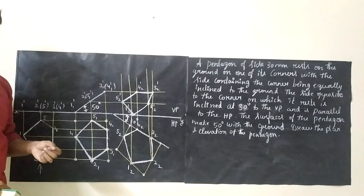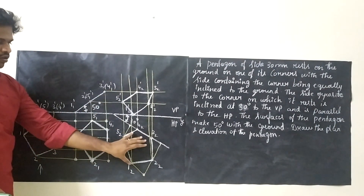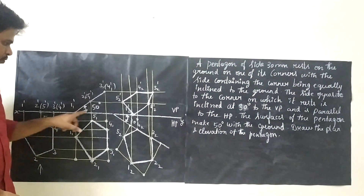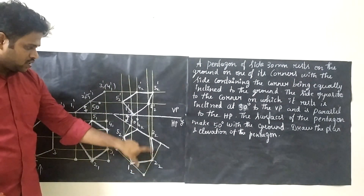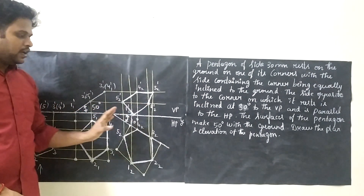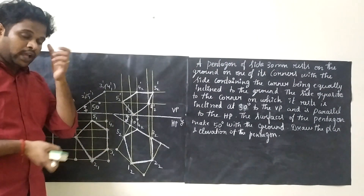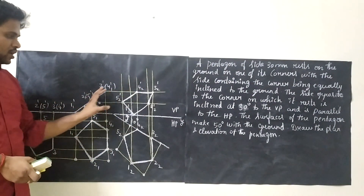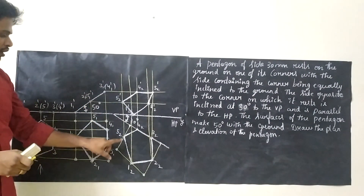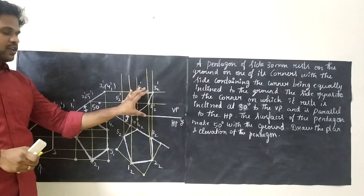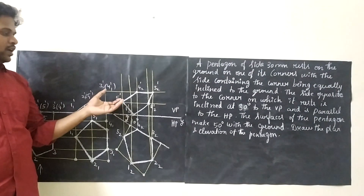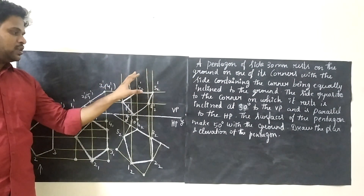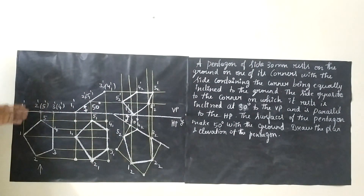Now extend all 5 corners of the top view vertically upward, and extend all 3 points from the previous step horizontally. Where point 1 from the vertical and point 1 from the horizontal meet, that is point 1-2-dash. Where point 2 meets point 2, that is 1-2-dash. Extend all corners and find where each pair meets. Join all 5 corners to get the pentagon front view. Then rub all unwanted lines.